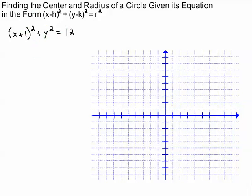So here's another equation of a circle. The center in this case, the number that makes the x part 0 would be negative 1. The number that makes the y part 0 is 0, just because y is not being added or subtracted from anything.